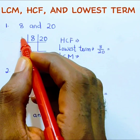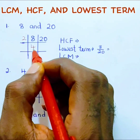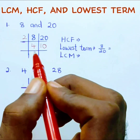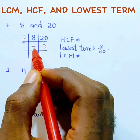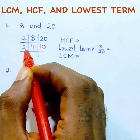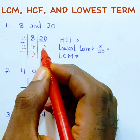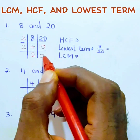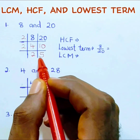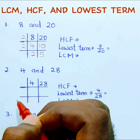That number is 2. 8 divided by 2 is 4, and 20 divided by 2 is 10. You then ask what number divides 4 and 10 — that's 2 again. 4 divided by 2 is 2, and 10 divided by 2 is 5. There is no number that can divide both 2 and 5, so we stop.